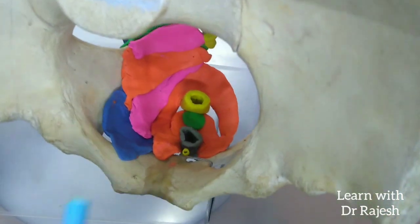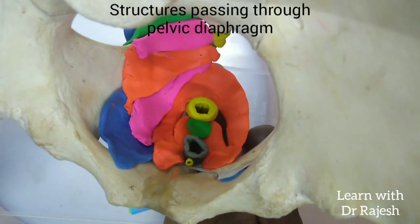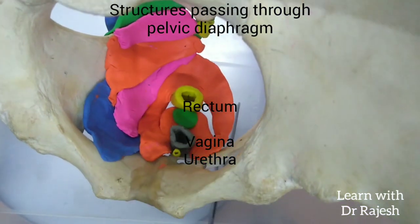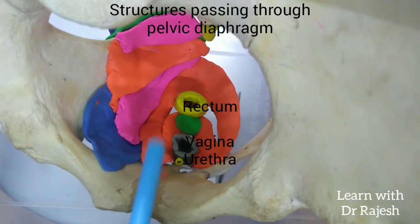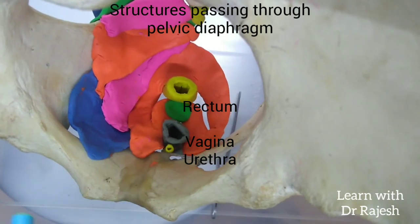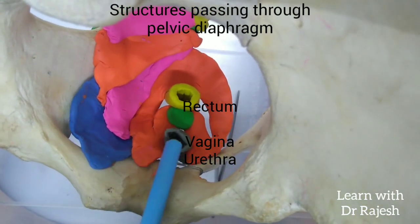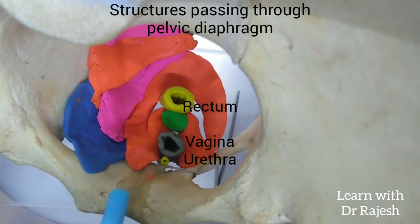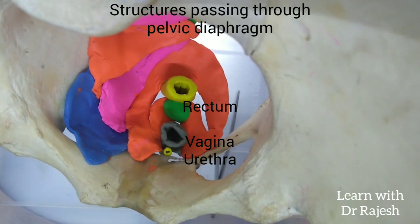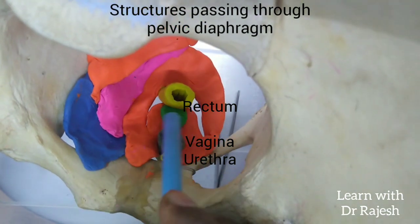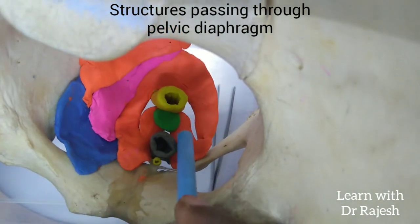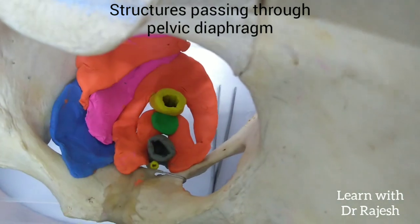The structures transmitted through the pelvic diaphragm include the rectum, which continues as the anal canal below the pelvic diaphragm. In females, it also transmits the vagina and, anterior to it, the urethra. In males, instead of these two structures, we have the prostate and the prostatic part of the urethra.